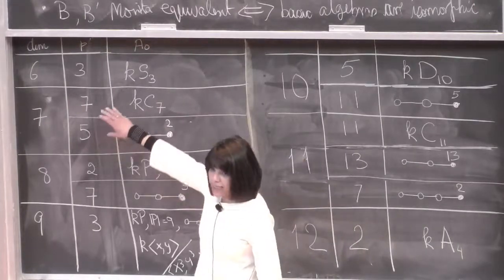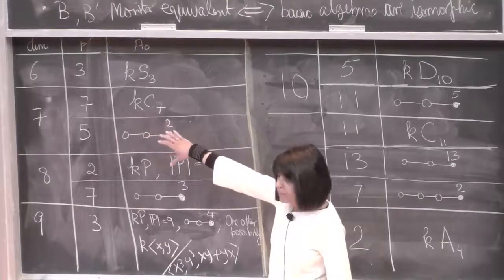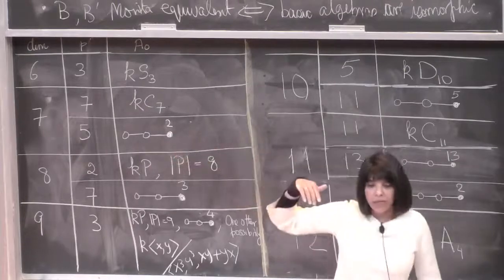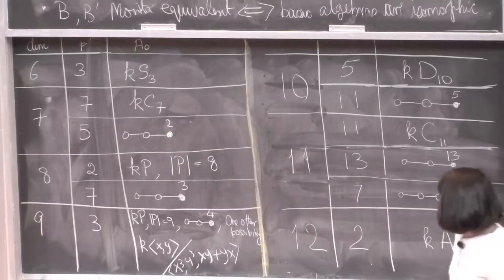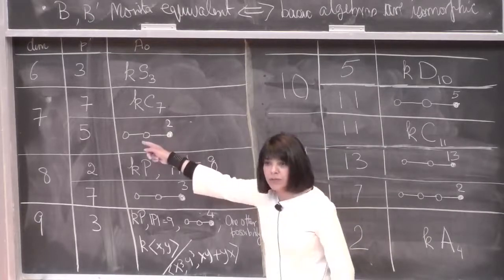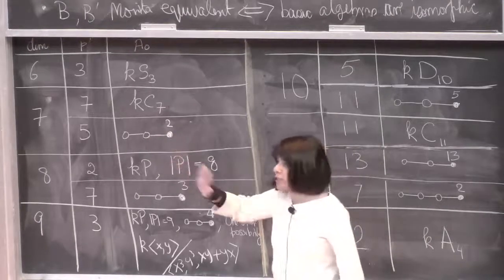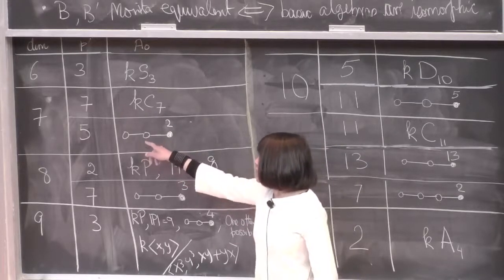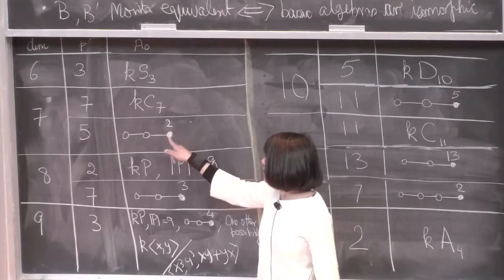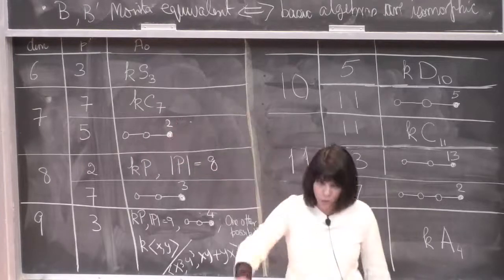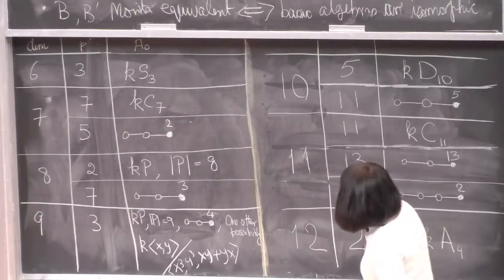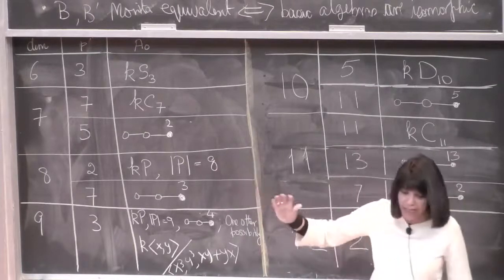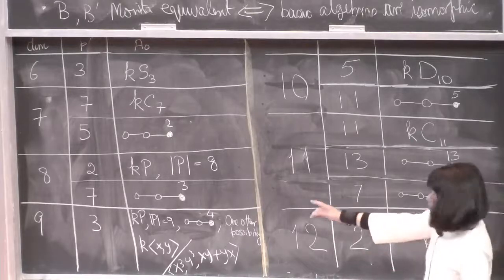At dimension 7, suddenly two primes are possible. You get the group algebra of C7, and you also get what is a very important class of algebras in block theory: a Brauer tree algebra. This is a Brauer tree algebra with two simple modules, with exceptional vertex and multiplicity 2. At dimension 8 you get two possibilities: group algebras of groups of order 8, and another Brauer tree algebra.